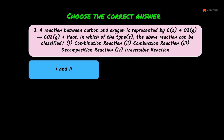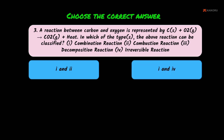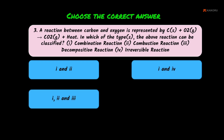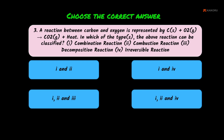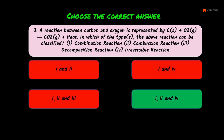The answer options are: first and second, first and fourth, first, second and third, or first, second and fourth. Combination is first, combustion is second, irreversible is fourth. So the answer is first, second and fourth — the last option.